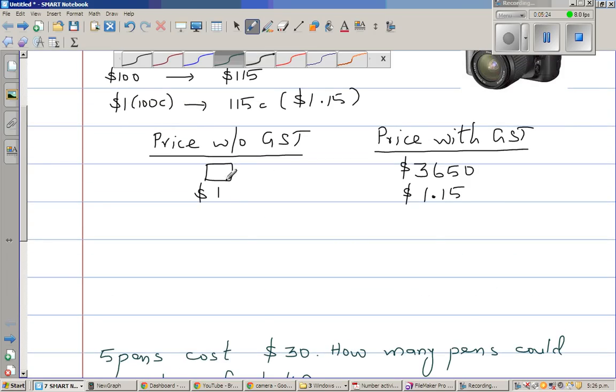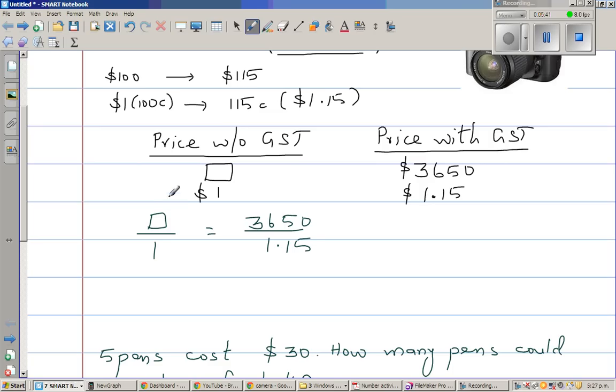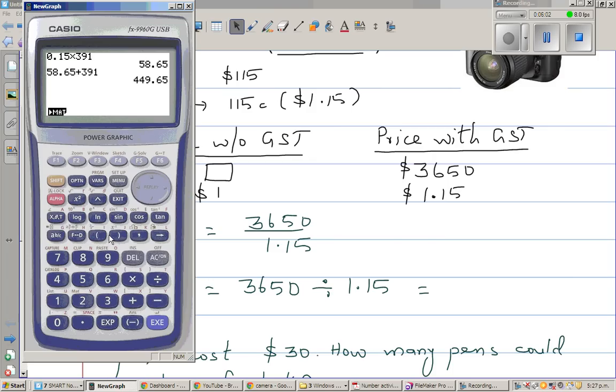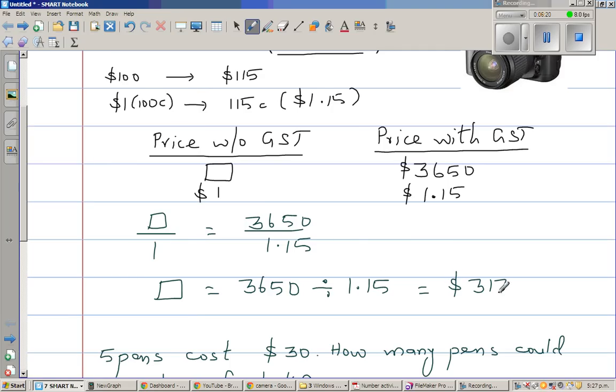So keep this in mind and let us go back. So using that same logic, the ratio of this would be equal to the ratio of this. So can I say the box over 1 is equal to 3650 divided by 1.15. Anything divided by 1 is that same thing. If we're dividing by 1, you get that same thing. So this box would be 3650 divided by 1.15. So for this we need a calculator. 3650 divided by 1.15, this is 3173.91. So the answer is 3173.91 in two decimal places, rounded to.